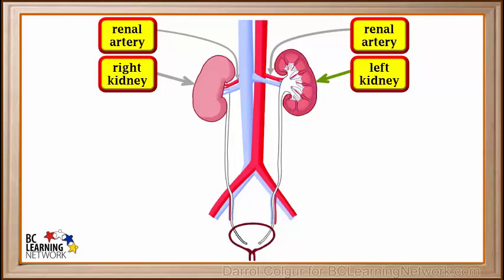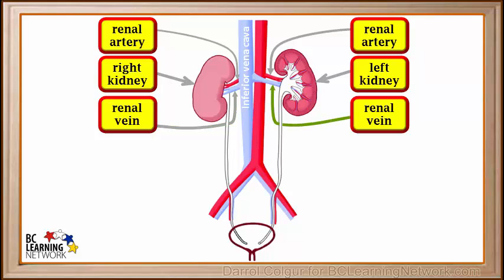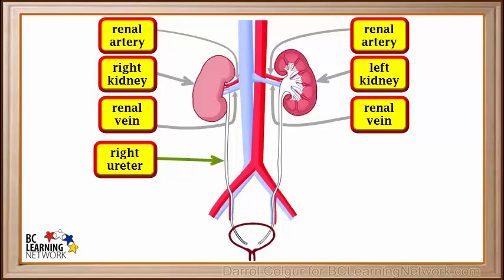The main purpose of the kidneys is to filter the blood and remove waste products from it. The renal vein takes blood leaving the kidneys into a large vein called the inferior vena cava, and back to the heart. The right renal vein takes blood out of the right kidney, and the left renal vein takes blood out of the left kidney. Ureters are tubes leading from the kidneys down to the bladder — they carry urine.